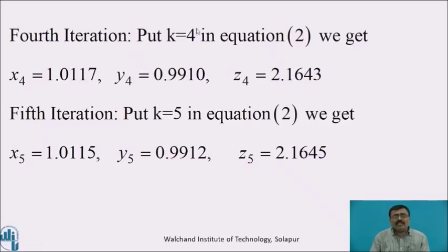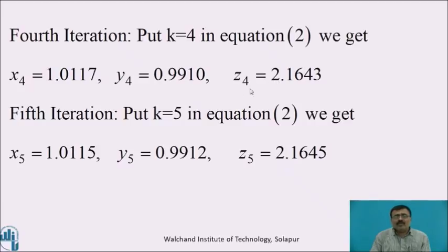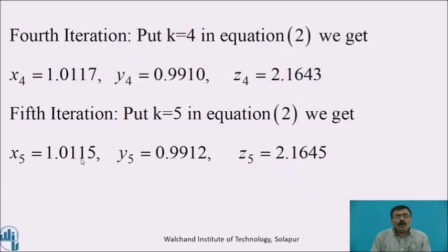The fourth iteration gives: x4 = 1.0117, y4 = 0.9910, z4 = 2.1643. The fifth iteration gives: x5 = 1.0115, y5 = 0.9912, z5 = 2.1645.